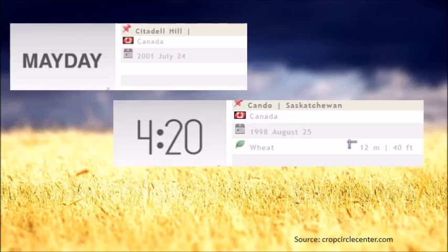And 420 appeared on the August 25, 1998 crop in Cando, Canada. That was the season before the Columbine High School shooting, which happened on April 20, 1999.